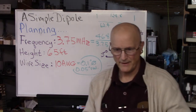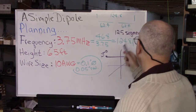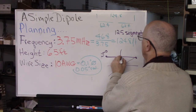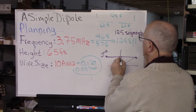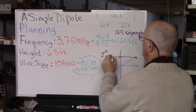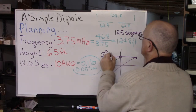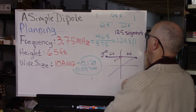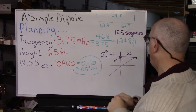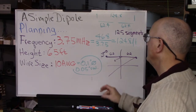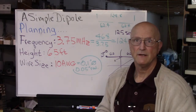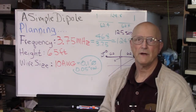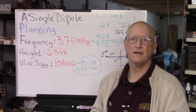With 125 segments, that means we have one segment in the middle where our source is going to be applied, with 62 segments on each side. Now we have all the information we need to start putting this into the 4NEC2 modeling program. Let's go ahead and do that. Now that we've done all of our planning, let's do the modeling.